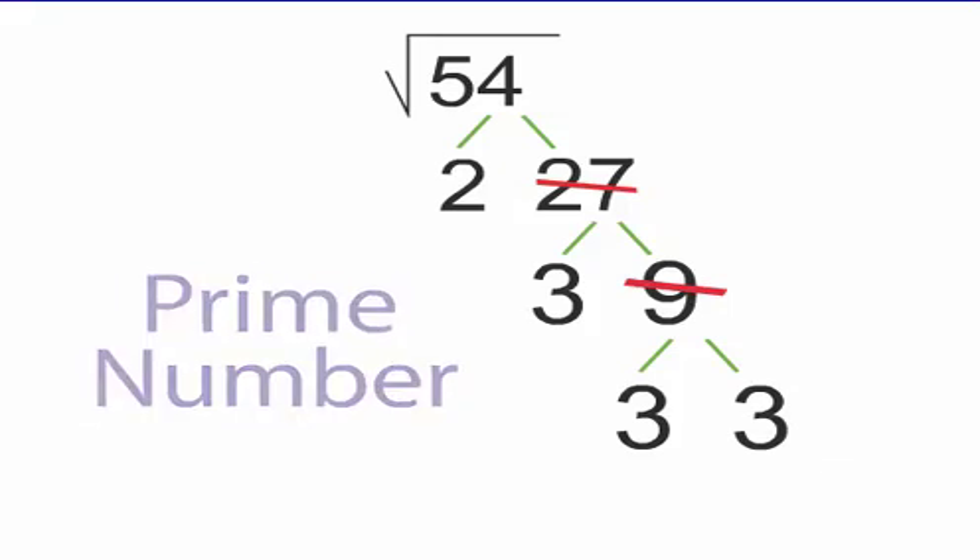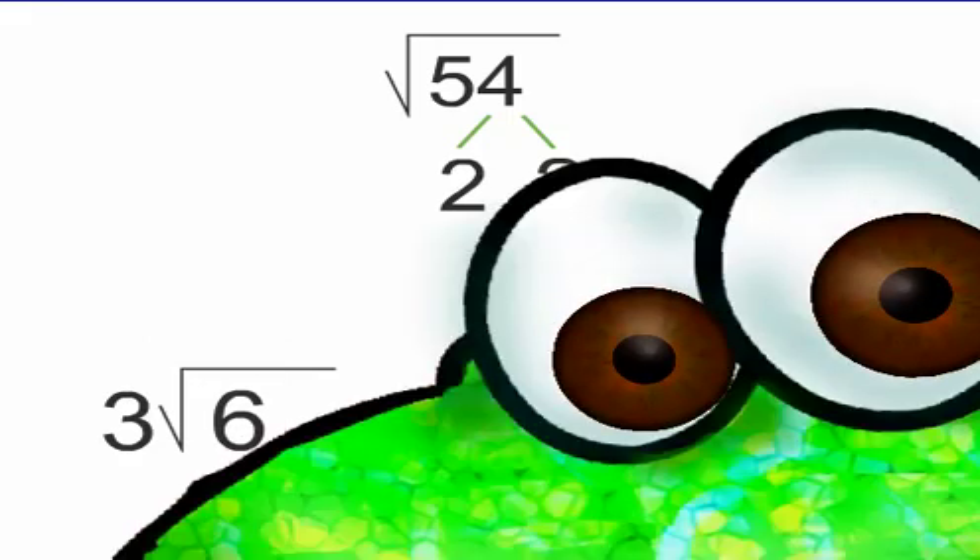Now notice that we have a pair of 3's. Whenever we have a pair of any number, we can pull out one of the numbers and place it outside the radical sign. We are left with a 2 and a 3 that remain inside the radical sign. 2 times 3 equals 6. So our answer is 3 root 6.